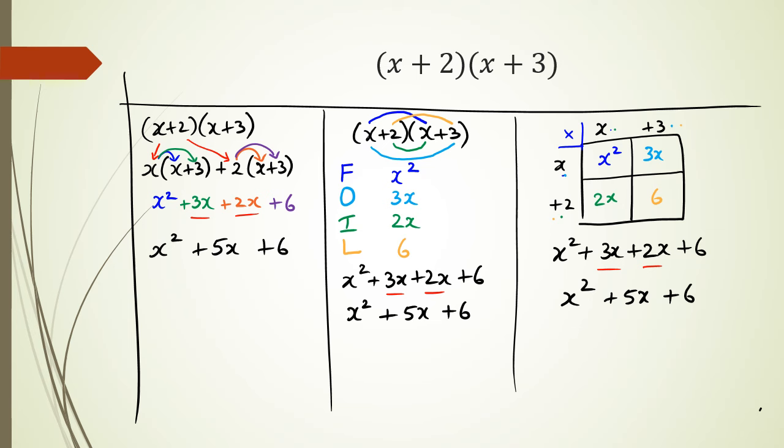Now there is one other method that some people use. Once you start doing enough of these you start picking up the pattern. And the pattern that most people, well some people do see, is that your middle term or the term with the coefficient of x is the sum of these two numbers. So if you notice that 3 plus 2, let me put it this way: x squared plus 5x plus 6, that's what the expansion is going to look like.